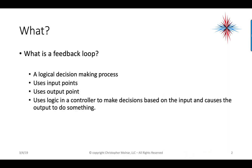What is a feedback loop? It's a logical decision-making process. It uses input points, it uses output points, and it uses logic in a controller to make decisions based on those inputs, and it causes the output to do something. It's very simple — it's a decision-making process.